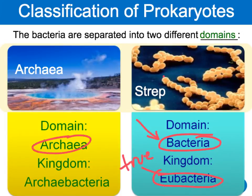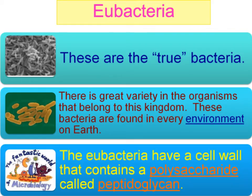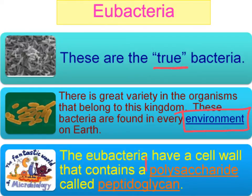Archaea means old, and we believe these were the first to be on Earth, though we discovered them after the other bacteria within our bodies. The eubacteria, or 'true' bacteria, show great variety and are found in every environment on Earth — cold, hot, wet, dry, everything. They have a cell wall that contains polysaccharide — 'poly' meaning many, 'saccharide' meaning sugar — and that is called peptidoglycan.